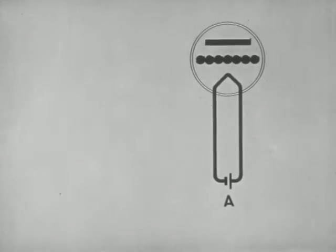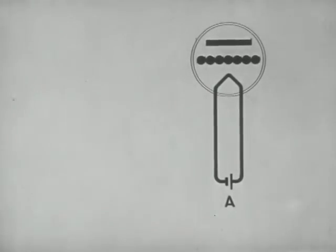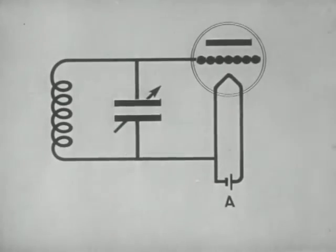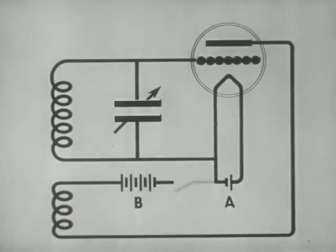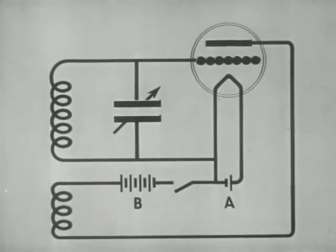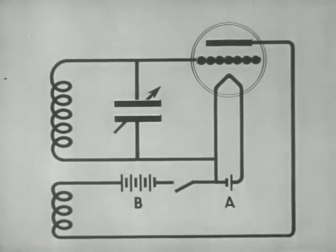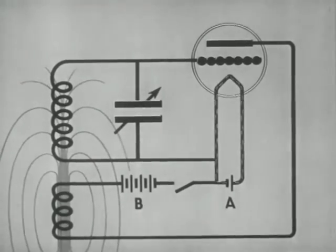The vacuum tube is also used in the transmission or sending station to generate radio frequency currents. In a tickler type oscillator, the grid circuit contains a coil and a variable condenser. The plate is connected through a coil, B battery, and a key to the filament circuit. When a current flows through the plate coil, the magnetic field of this coil sweeps across the grid coil and induces a voltage in it. This happens when the key is pressed.